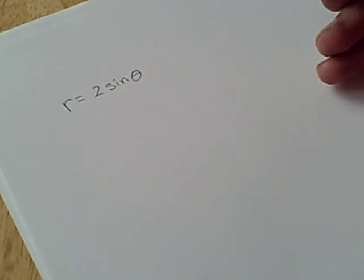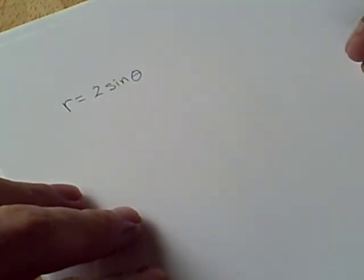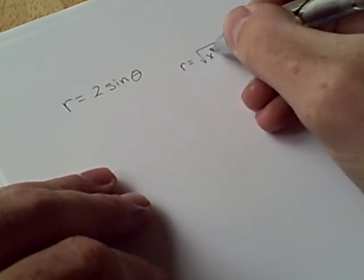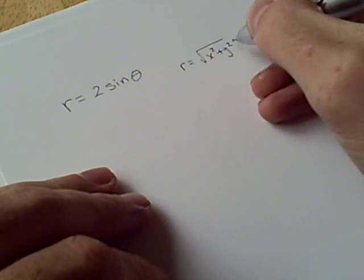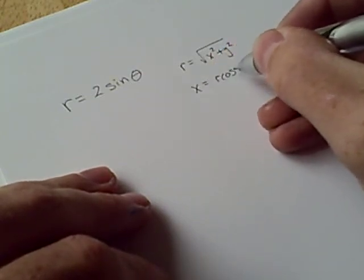We looked at something like this in class at one point, and we saw that it was a circle shifted up the y-axis by 1. Now, to convert from something like this to something involving x or y, there's a couple of things we need to keep in mind. How the radius is connected to x and y, and also how x and y are related to the radius and the angle.